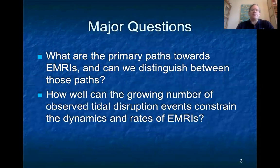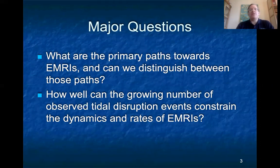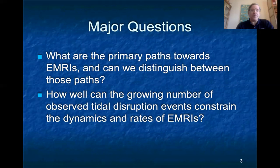There are a couple of major questions to ask at this stage. First, what are the primary paths towards EMRIs, and are there particular signatures that will allow us to distinguish between these paths? Second, given that we now have a growing rate of detection of tidal disruption events where stars are ripped apart by supermassive black holes, can we use these to constrain the dynamics and the rates of the EMRIs themselves?